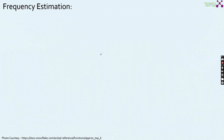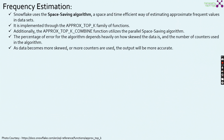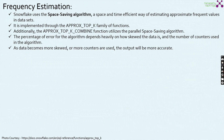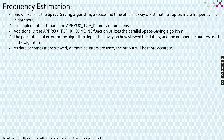Moving on to frequency estimation. It uses the space saving algorithm — a space and time efficient way of estimating approximate frequent values in the data set. It is implemented through the APPROX_TOP_K family of functions. Additionally, the APPROX_TOP_K_COMBINE function utilizes the parallel space saving algorithm. The percentage of error for this algorithm depends heavily on how skewed the data is and the number of counters used. As the data becomes more skewed and more counters are used, the output will be more accurate.